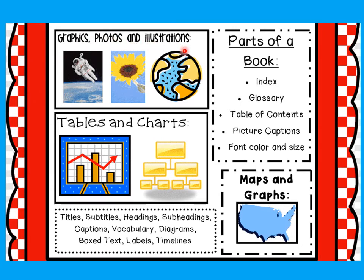Graphics, photos, and illustrations are graphic features. Tables and charts are also graphic features. Parts of a book like the index, glossary, table of contents, picture captions, font color and size — these are text features. And finally, maps and graphs are graphic features.